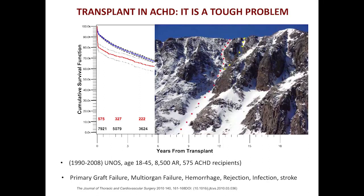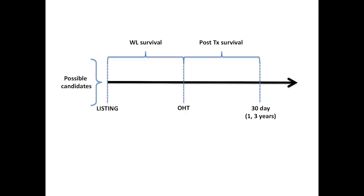When I see a Fontan patient in consultation, I think: we are not on the bunny slopes anymore. This is a double black diamond and we better think long and hard before jumping off this cliff — both for the patient and for the program. Is this the right time? Can we do it? The focus of this talk is: once we decide to list the patient, what can we do and how can we create a framework to get it right?